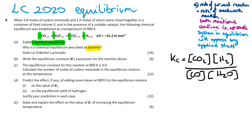The equilibrium constant for the reaction at 800 Kelvin is 4. The temperature is stated because Kc changes with temperature but not with other changes in condition. We know that Kc = 4. Now calculate the number of moles of carbon monoxide in this equilibrium mixture at this temperature.